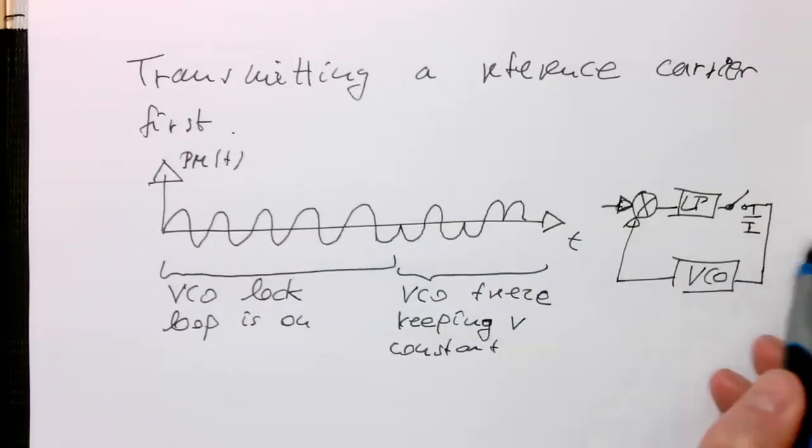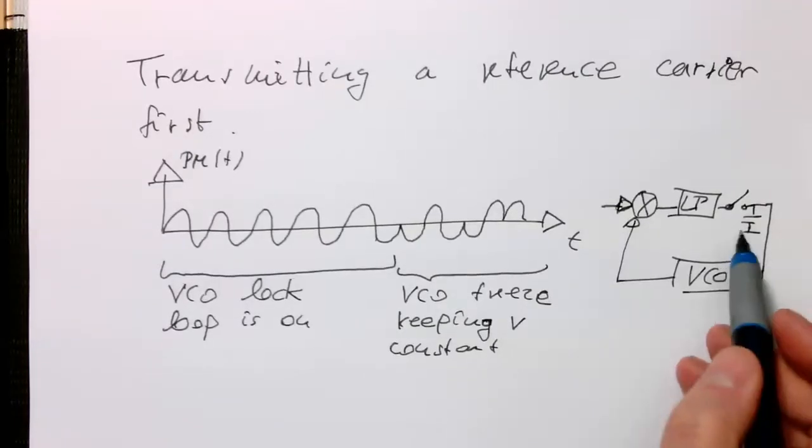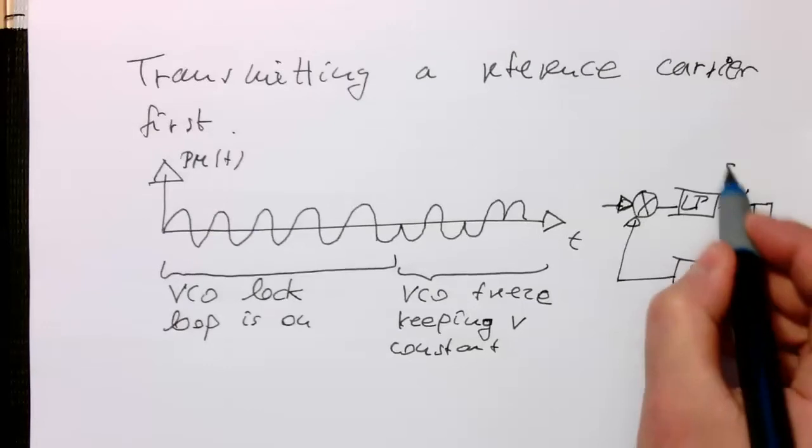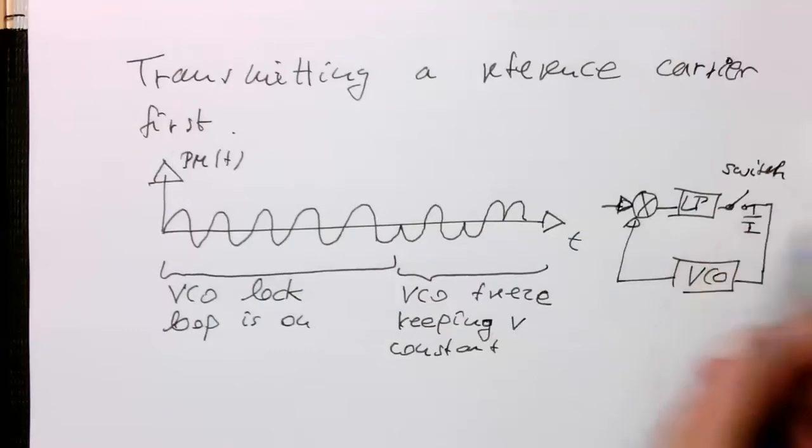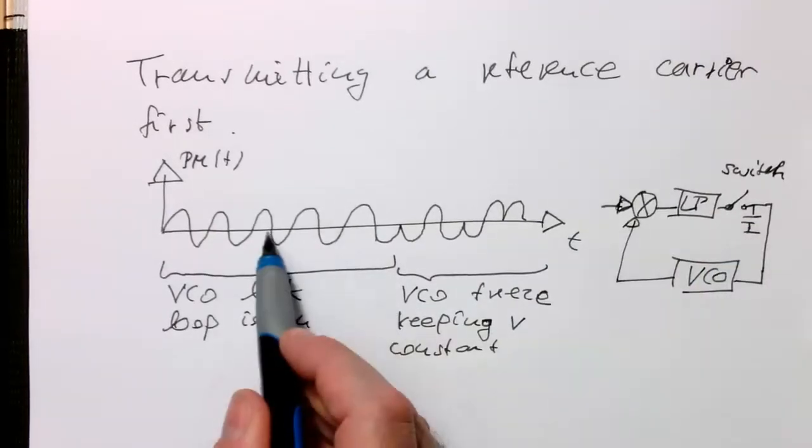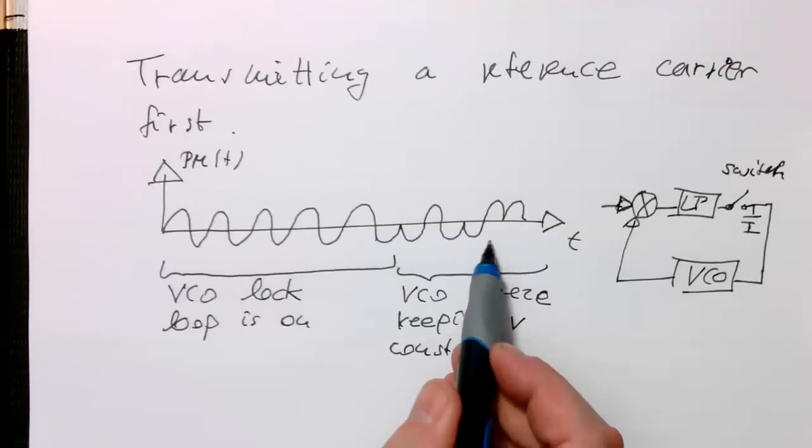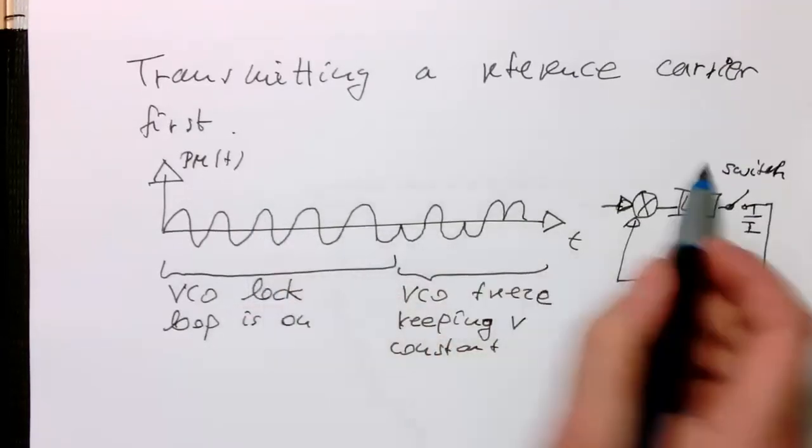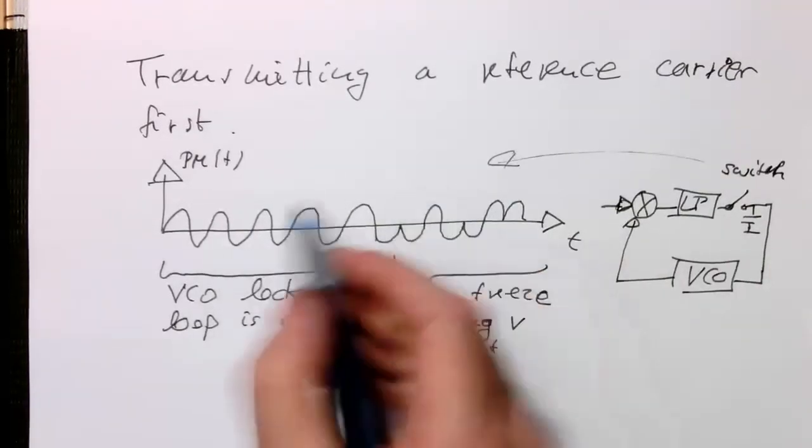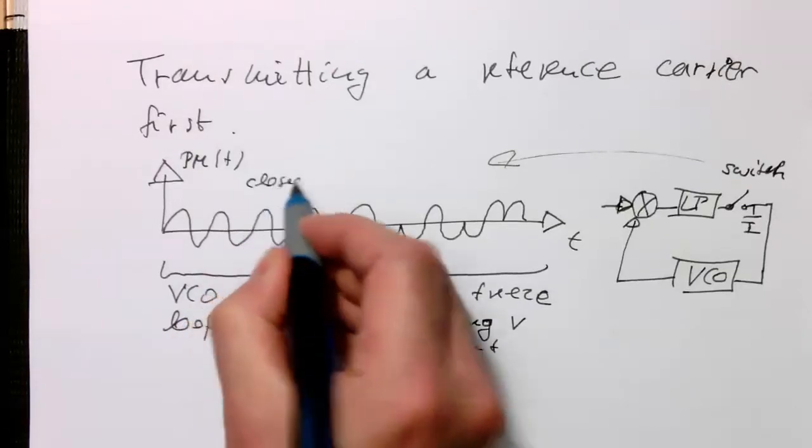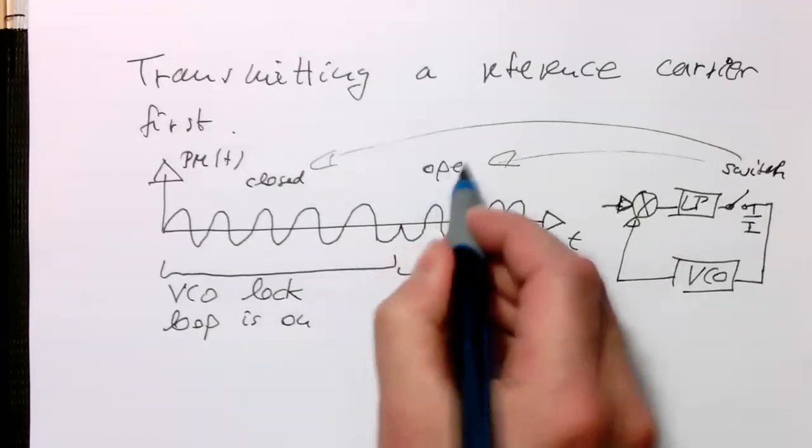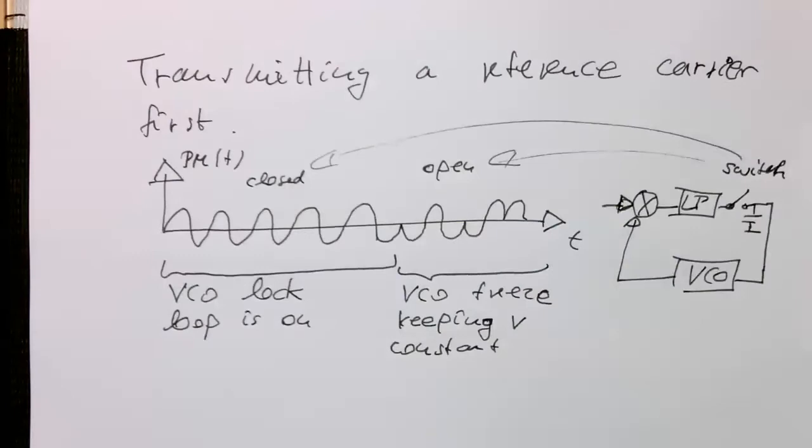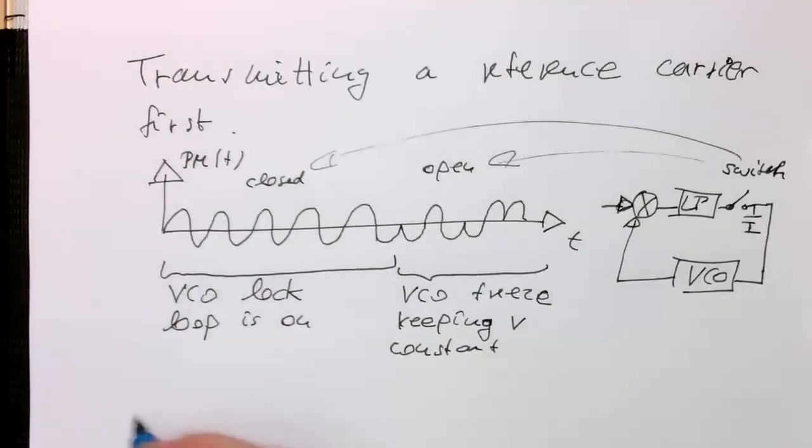And so then this switch is closed. So the switch here is closed here, and then it's opened here at this point, once the PLL has locked onto this. So here, the switch here is closed, and then here the switch is open. So that's done in old-fashioned PAL television.